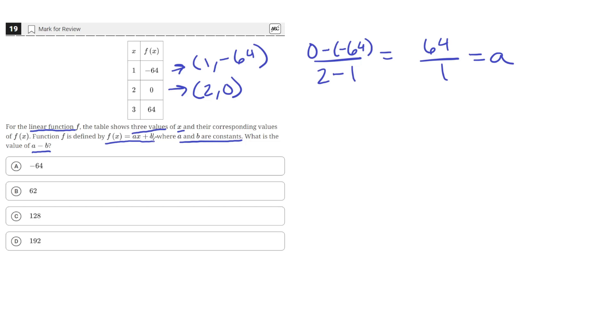Then to find the value of b, we can just plug in this value of a and then plug in values of a point from this table. So our function f(x) equals a, which is 64, times x plus b.